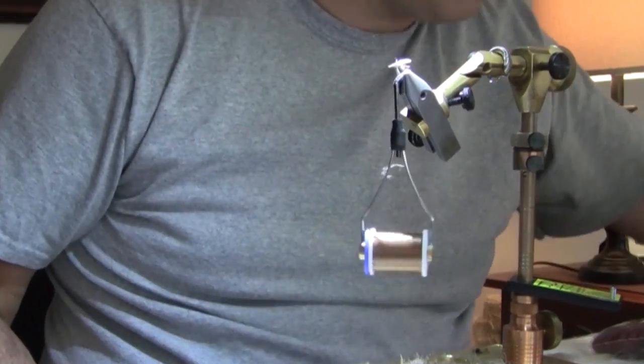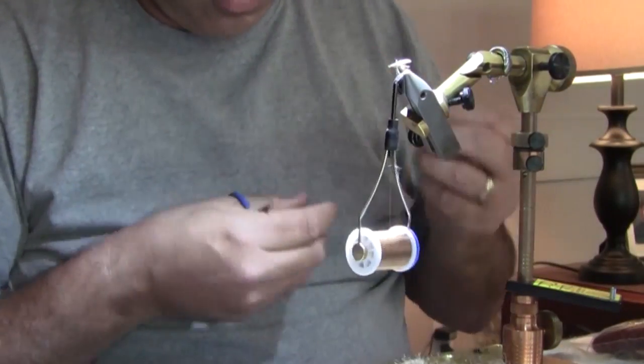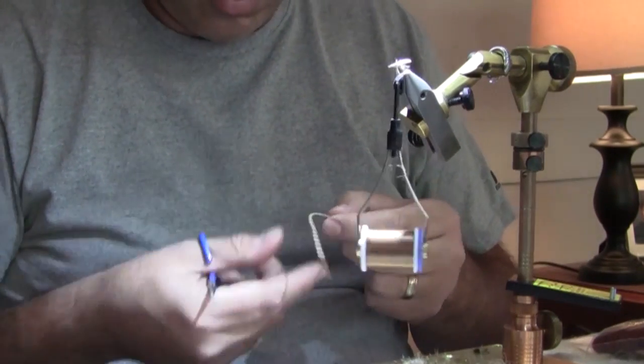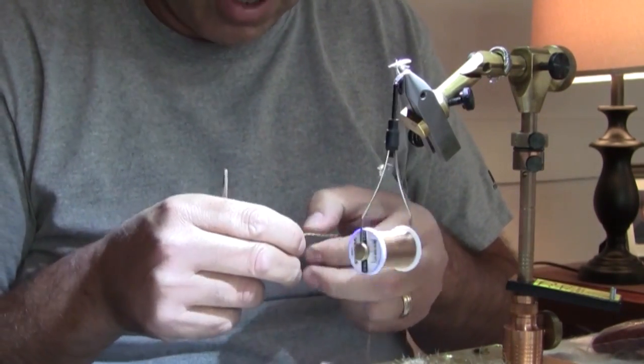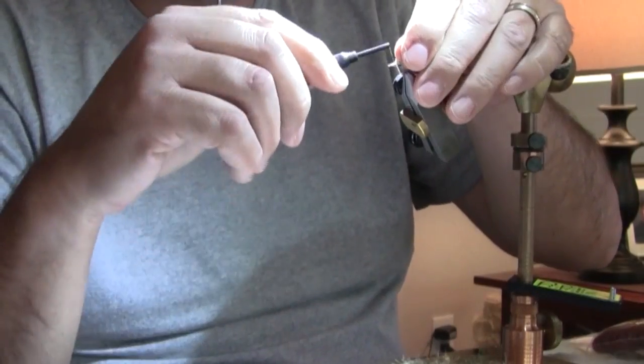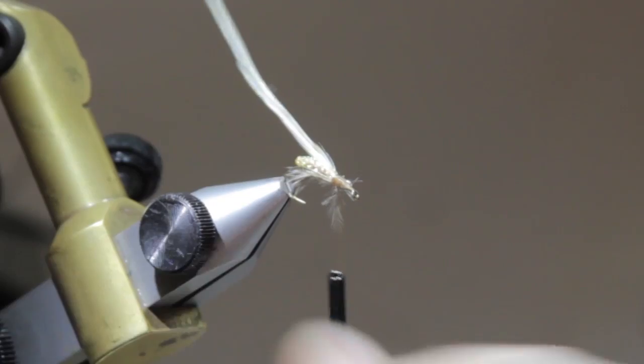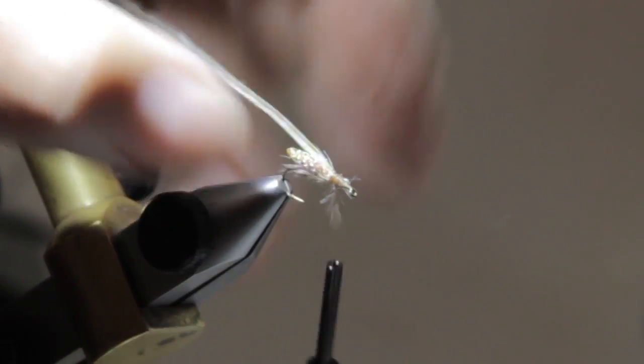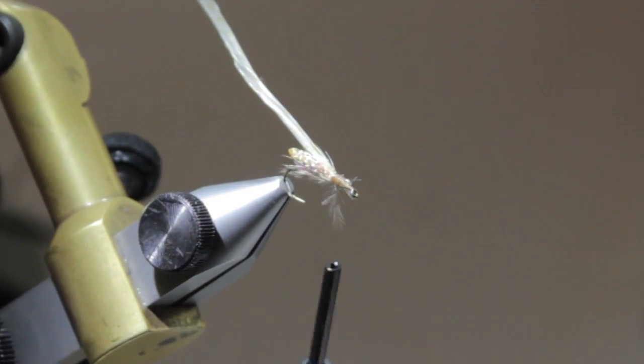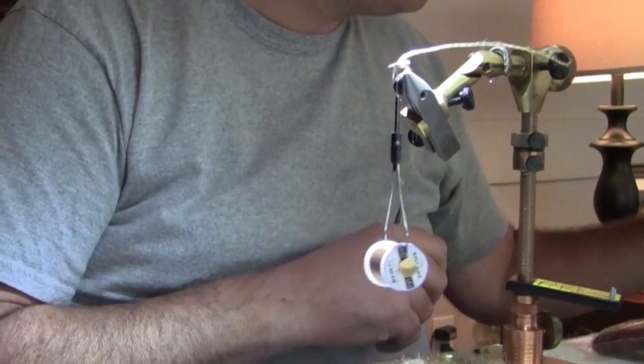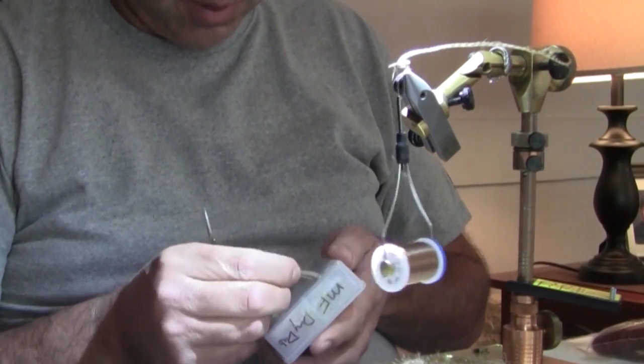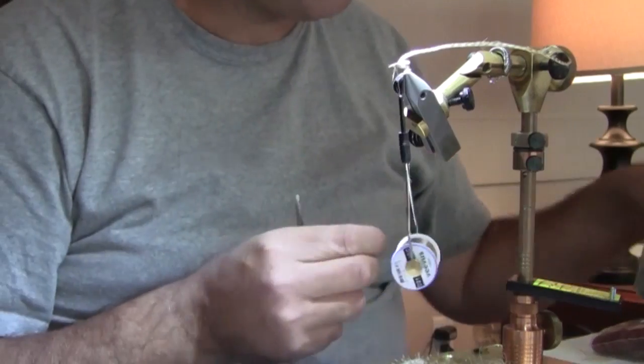Now we're going to tie in a barred ginger dry fly hackle. Then the next thing we'll need is some tan dry fly dubbing. We're going to use a little hairline microfine.